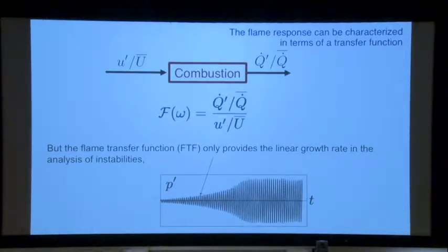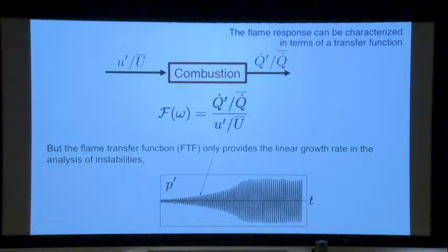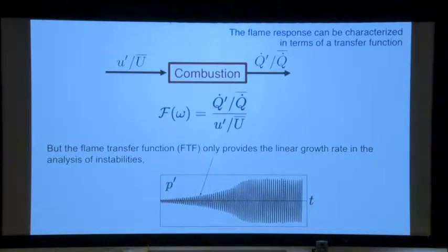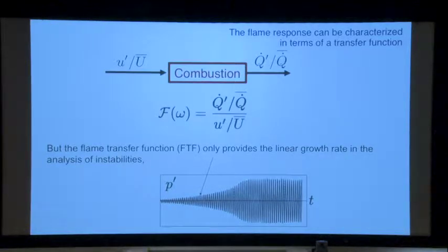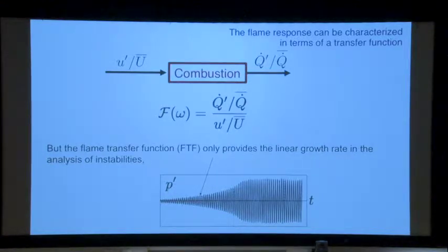And in addition, you may have a limit cycle. The limit cycle is the place where you get to a constant value. This is actually a real signal — you see the pressure P starts growing here. This is the linear regime, small perturbation. And then you get to the limit cycle. And we would like to know more about these limit cycles.